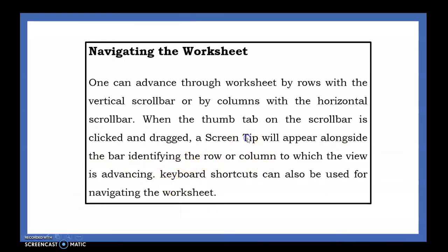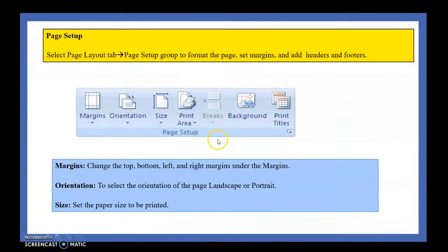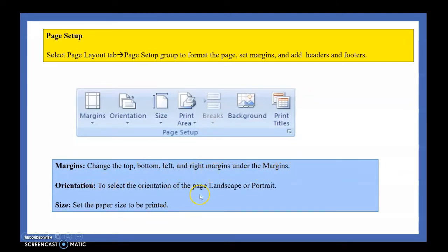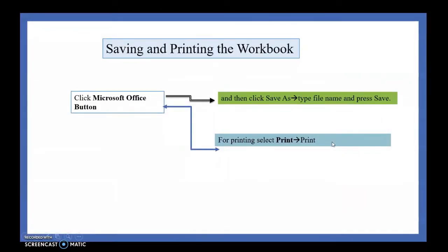Next is page setup. Page setup is found under the Page Layout tab inside the Page Setup group. Click the Page Layout tab and you will get the Page Setup group with options to set the page before printing. We can set the margins — top, bottom, left, and right. We can change the orientation — landscape or portrait. We can also change the paper size.